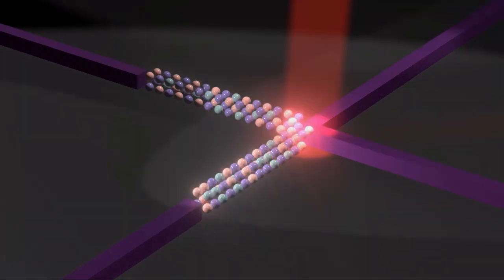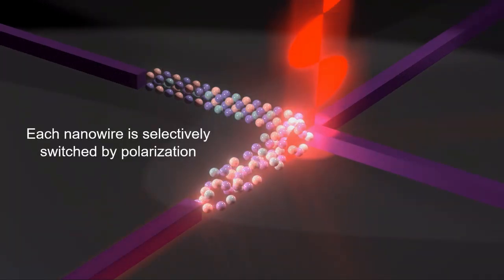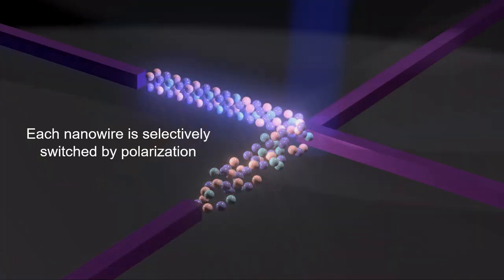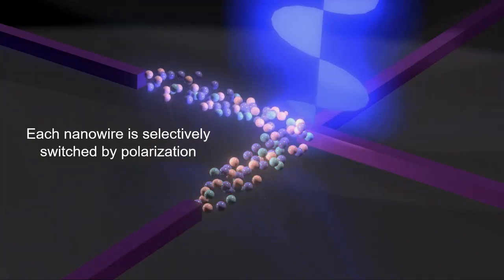When polarized light is sent to the device, only one specific nanowire switches its state, while the other one is unaffected. Therefore, the data can be stored and processed in a polarization selective way.